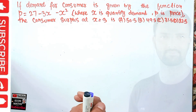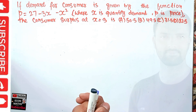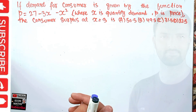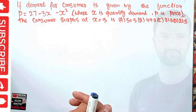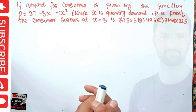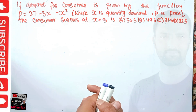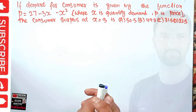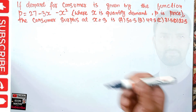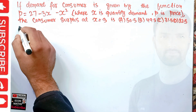Consumer surplus is simply the difference between the price that the consumer is willing to pay and what he actually pays. That difference between those two prices gives us the consumer surplus. Our demand function — more precisely the inverse demand function — is p = 27 minus 3x minus x squared.